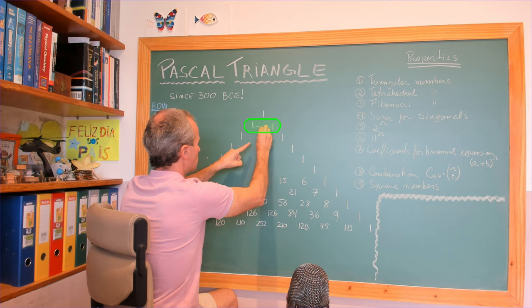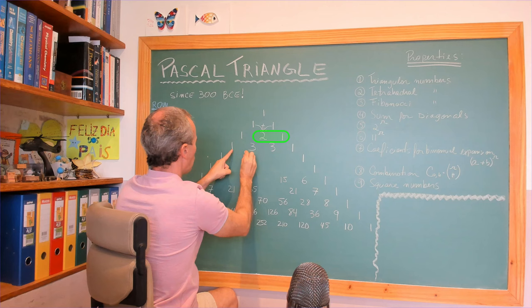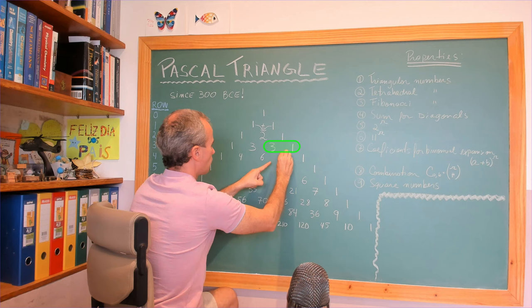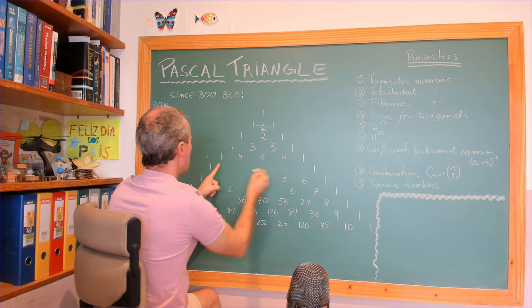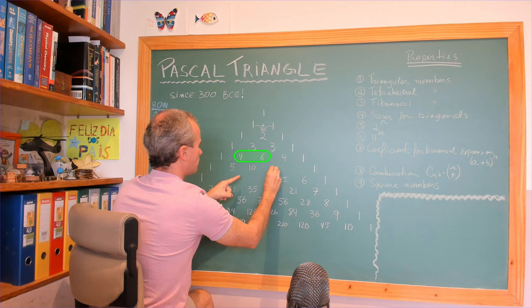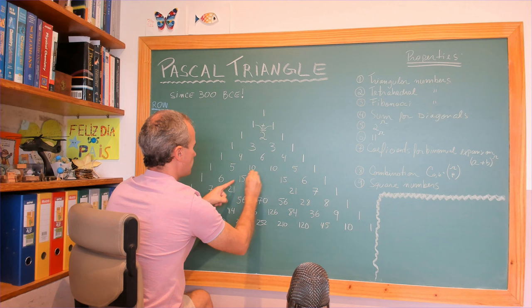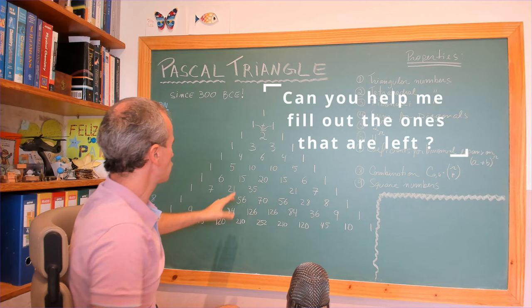One and two makes a three. One and three makes a four. Three and three makes a six, makes a four. Can you see? And can you see the symmetry? One and four makes a five, makes a ten, ten, five, six, fifteen, twenty. Now I left a few in blank so we can put it together.